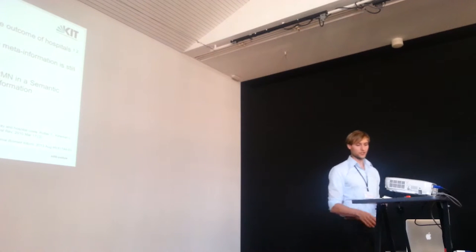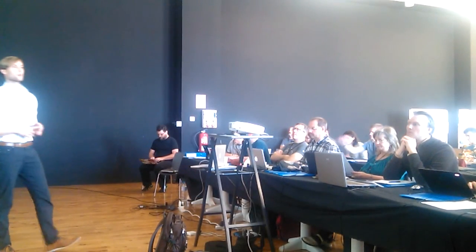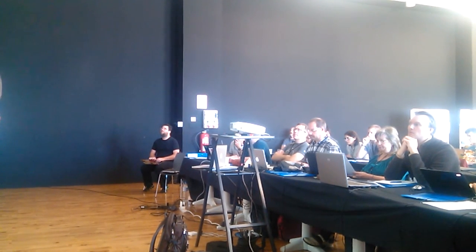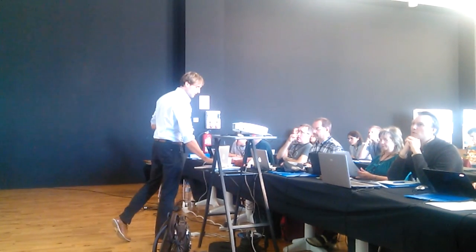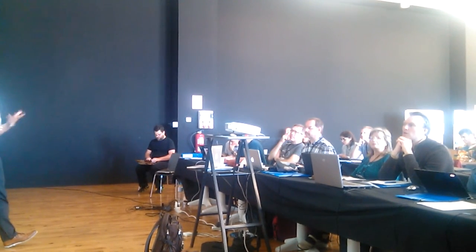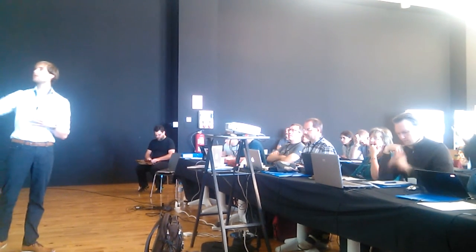Before we start, I'll show the architecture of our project. On the top we have Searchipedia, which is a Semantic MediaWiki instance mostly used by knowledge workers — there are 90 people working in it. We use it for annotating radiological images and for creating first drafts of ontologies, and we link it to external data sources like PubMed. On the bottom we have Xlap, a file storage system for regular images, mainly used by physicians.